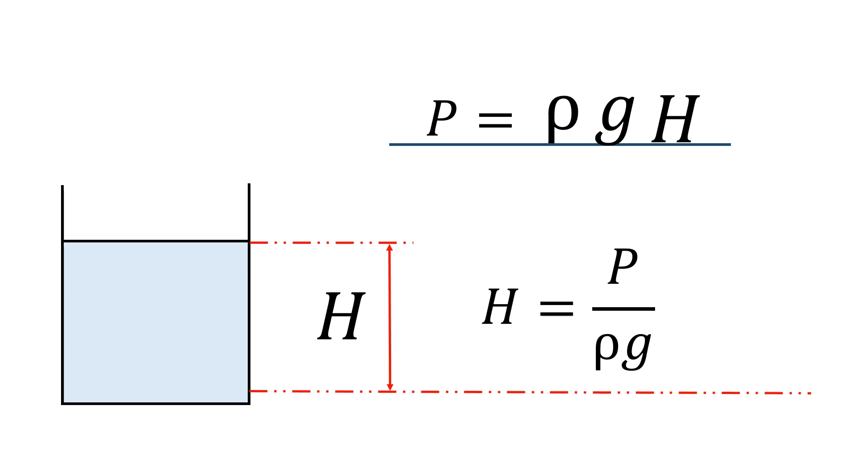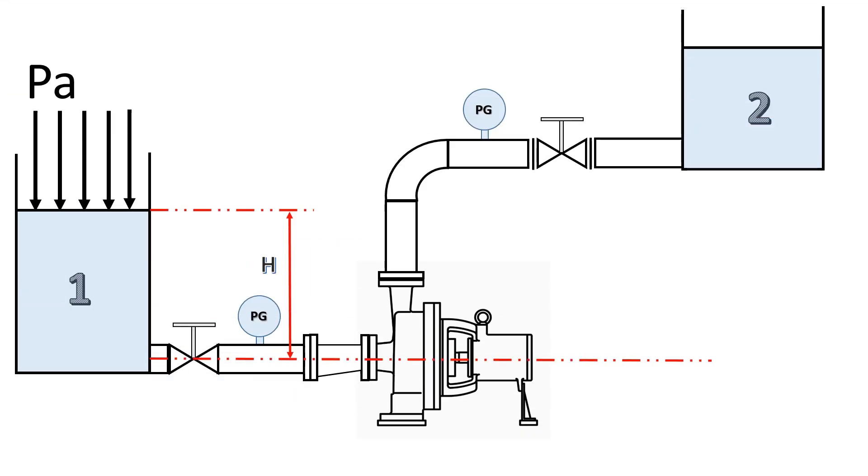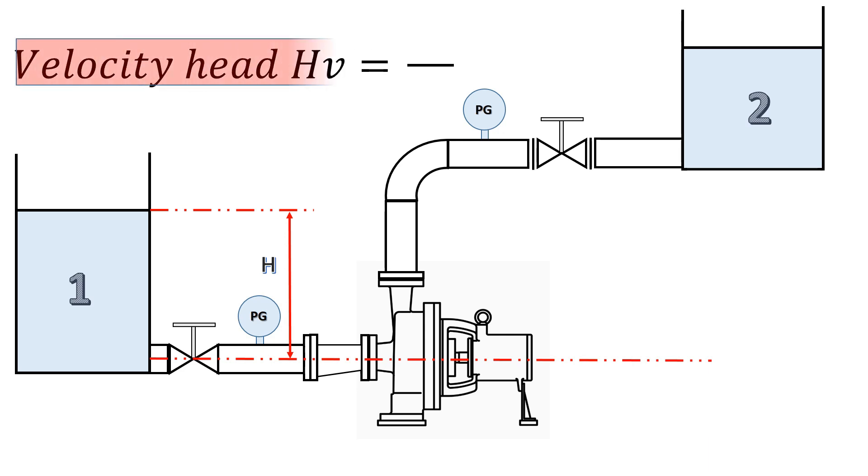In addition to this pressure head h, the atmospheric pressure also acts on the free surface of the water, which can also be written in terms of height of water column. That is atmospheric pressure divided by water density rho and gravitational acceleration g. Since the water is flowing with average velocity v through this inlet pipe, it will have some kinetic energy. This kinetic energy can be represented in terms of velocity head as v square divided by 2g.